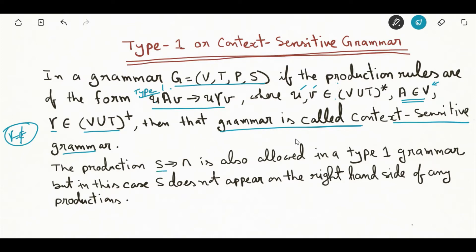The production S is rewritten as null is also allowed in Type 1 grammar, but in this case S does not appear on the right-hand side of any production.